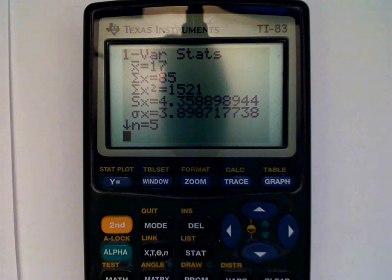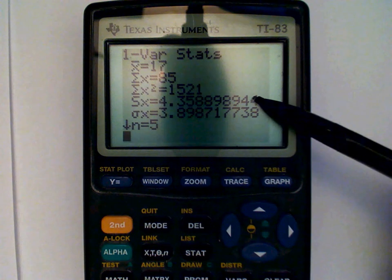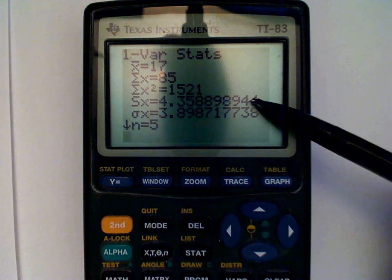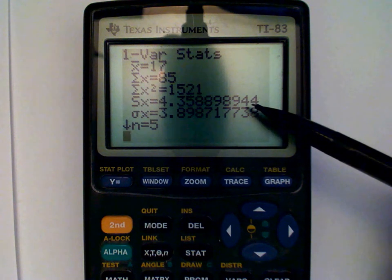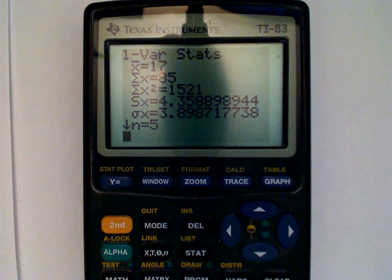And then we look on this line right here. And then we see S standing for standard deviation. That's the 4.35 that we calculated by hand.